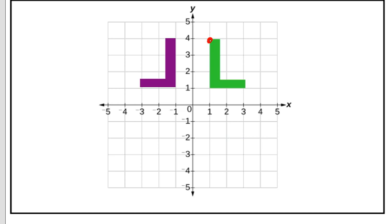So if I take that point there, it reflects to right there. The ordered pair to start with would have been (1,4). After the reflection, the ordered pair would be (-1,4). So like we just said, we reflected over the y-axis, the y value stayed the same, x value changed signs.